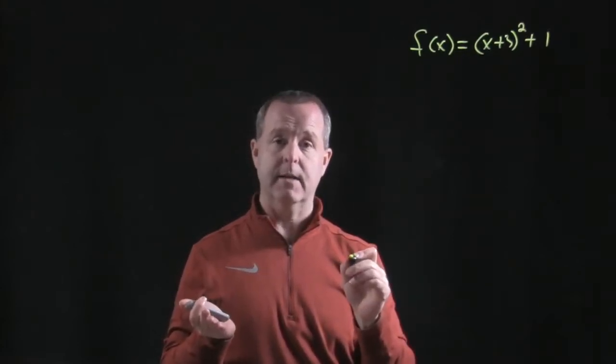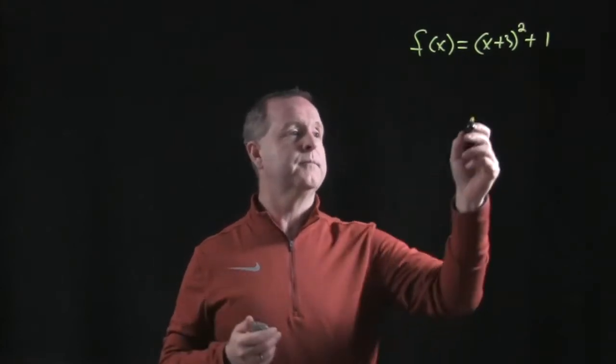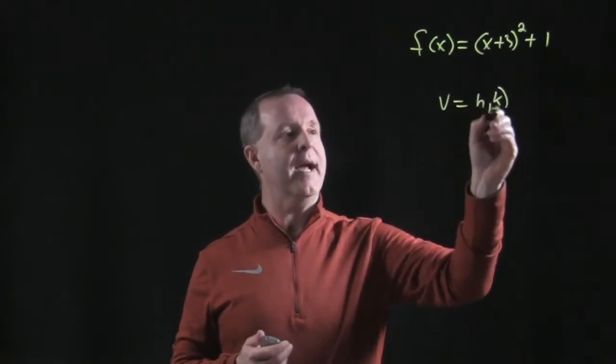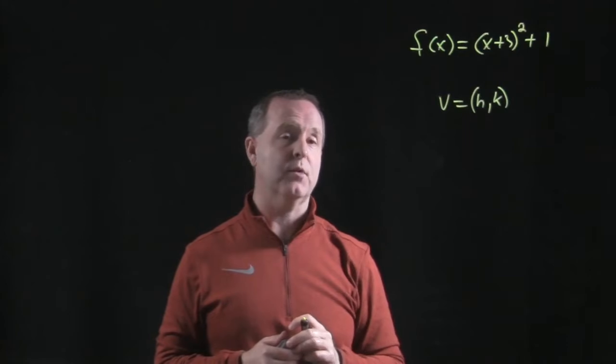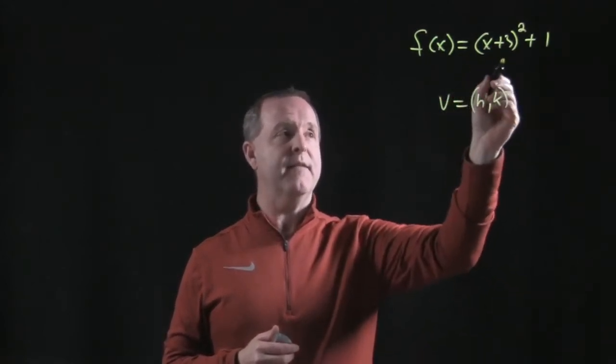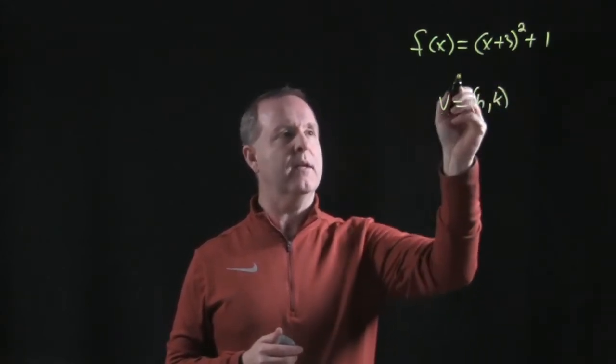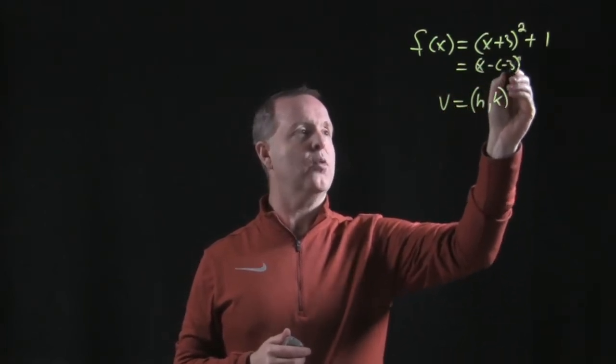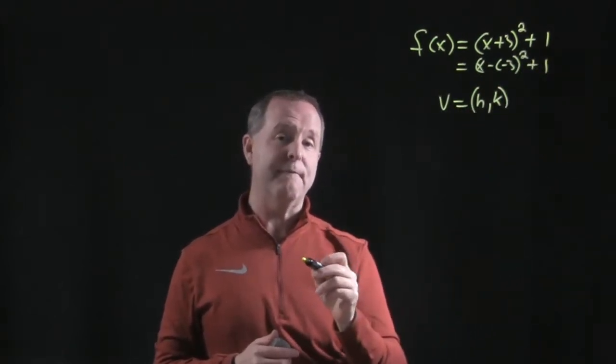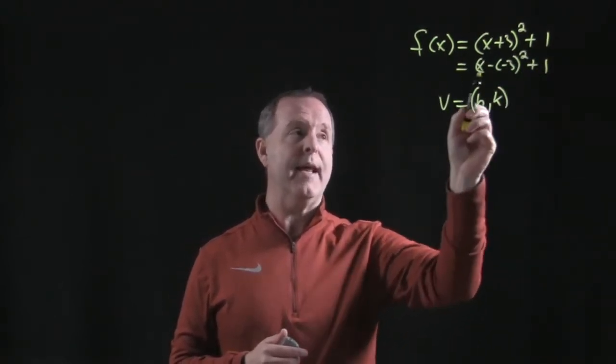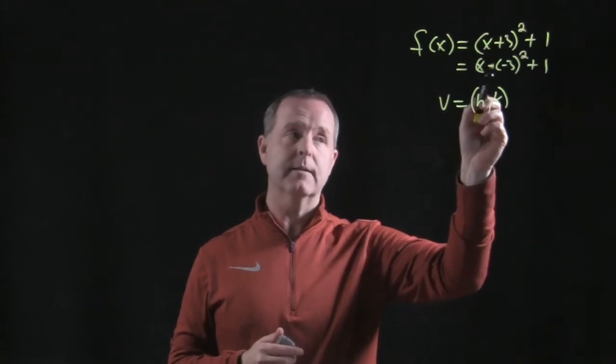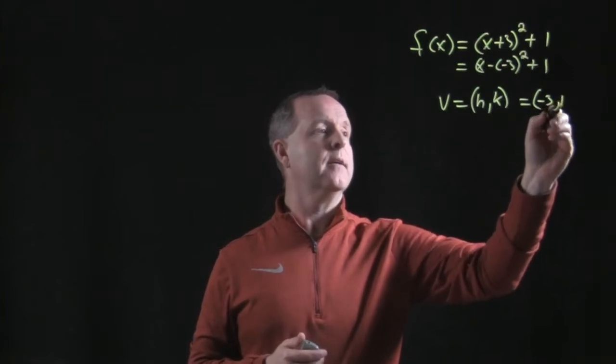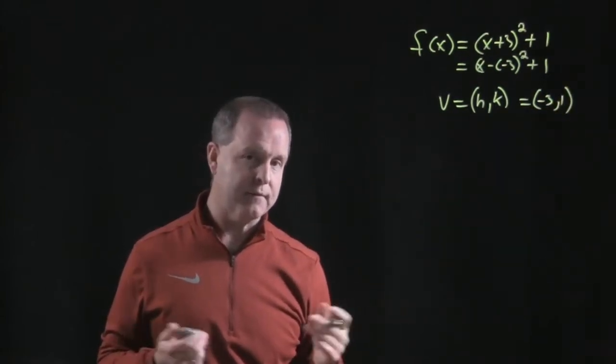So first we look for its vertex, and its vertex was the point h and k. So can we identify those two points based on this graph? Well, in order to identify the h, we need to do one thing a little careful here. This is really an x minus a minus 3 squared. When we put it in that form, then we have it in the form that we need to have where it's x minus h. So h is now a negative 3, and k is a 1. So we're able to find its vertex.